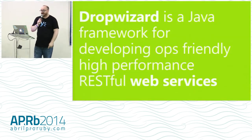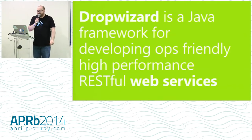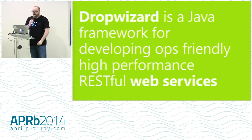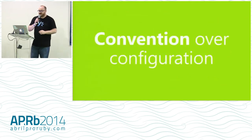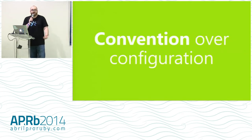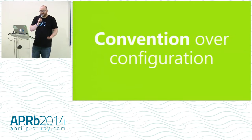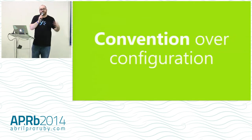Dropwizard is a Java framework for developing ops-friendly, high-performance RESTful web services. We're going to see a lot of similarities to something like Sinatra or Grape — basically collections of endpoints optimized for serializing to JSON, pretty lightweight, gives you tools to use. But it also makes some important decisions for us. It follows a key principle we're familiar with from Rails: convention over configuration — it makes decisions for us so we can get rid of boilerplate and start delivering value. It provides support for resources, metrics, configuration, logging, and other typical components.